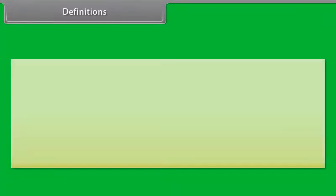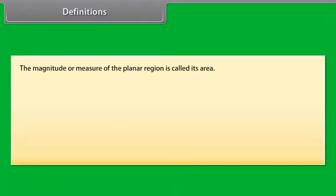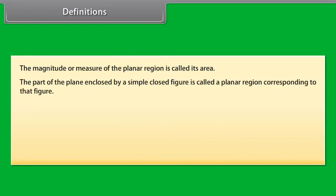Definitions. Students, the magnitude or measure of the planar region is called its area. And do you know what a planar region is? The part of the plane enclosed by a simple closed figure is called a planar region corresponding to that figure.